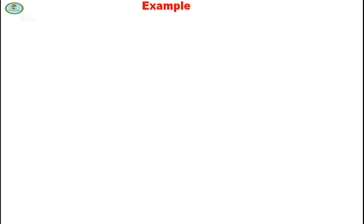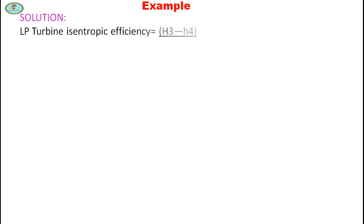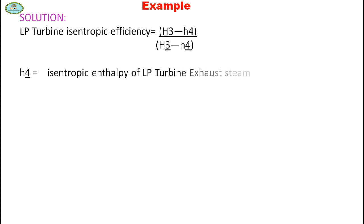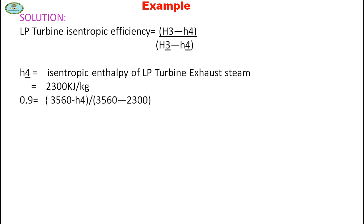LP turbine isentropic efficiency is (H3 − H4) divided by (H3 − H4_isentropic), where H4_isentropic is the isentropic enthalpy of LP turbine exhaust steam = 2300 kJ/kg. Solving: 0.9 = (3560 − H4) / (3560 − 2300), giving H4 = 2426 kJ/kg.